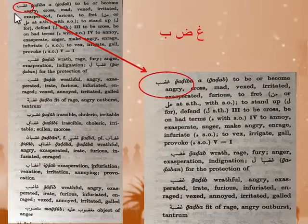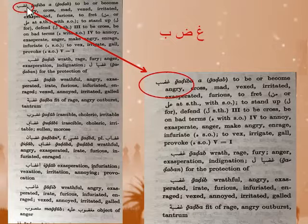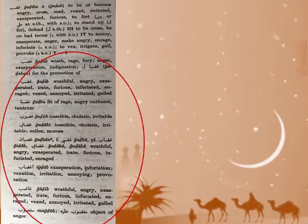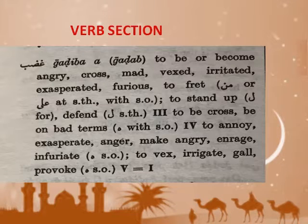First of all, we find our root. Notice how the root sticks out a little bit, and the rest is all lined up. This is how you can tell when you're getting to a new entry — all these words have the same three letters in them. These are all subentries. Every dictionary entry is divided into two parts: up top is the verb section — what gives it away are all these Roman numerals — and the bottom part is everything else, primarily nouns and adjectives. For this lesson we're only going to look at the verb section.